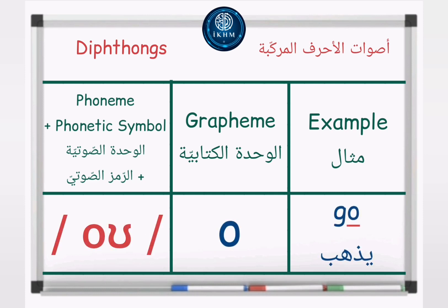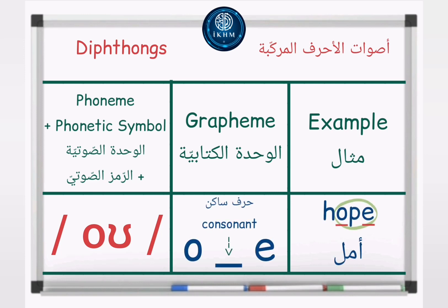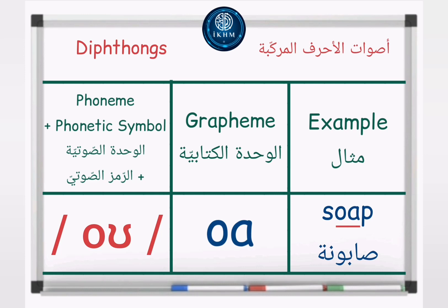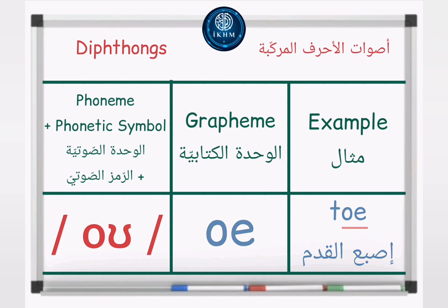Phoneme /oʊ/, phonetic symbol O. Grapheme: letter O. Example: Go — /oʊ/ — Go. Grapheme: O consonant E. Example: Hope — /oʊ/ — Hope. Grapheme: letters O, A. Example: Soap — /oʊ/ — Soap. Grapheme: letters O, E. Example: Toe — /oʊ/ — Toe.